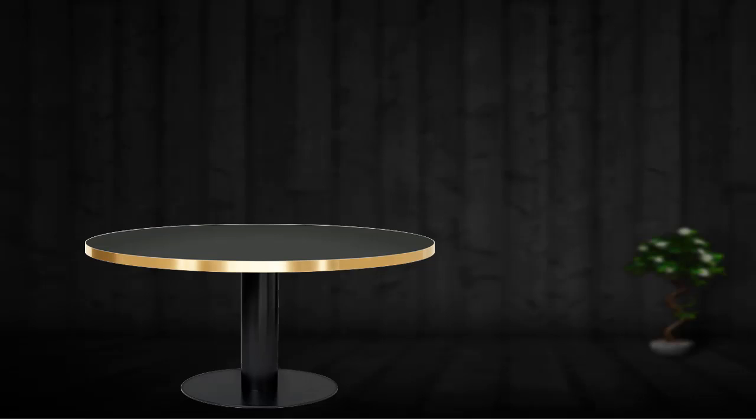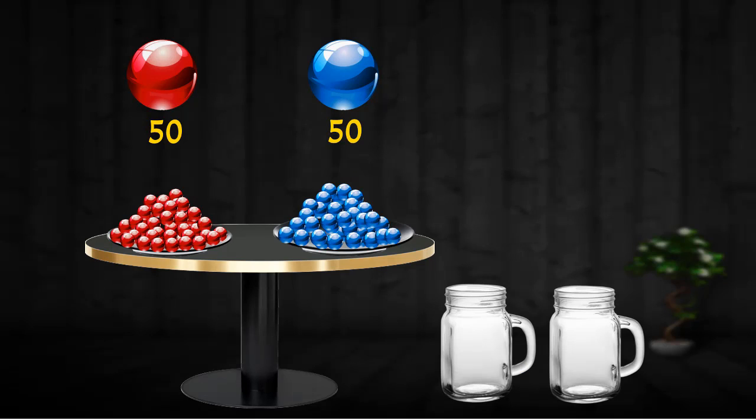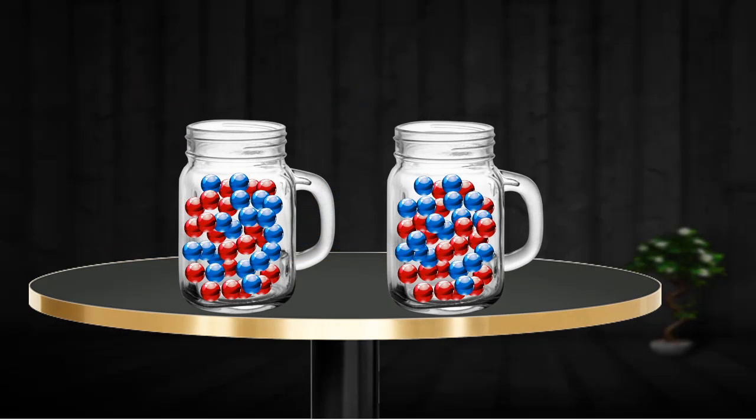You are given 50 red marbles and 50 blue marbles. You are also given two jars to place these marbles. You need to place all the marbles into the jars such that when you blindly pick one marble out of one jar, you maximize the chances that it will be a red marble.